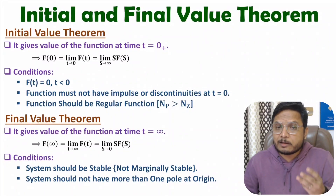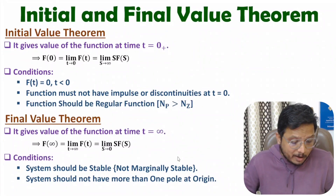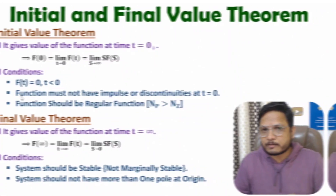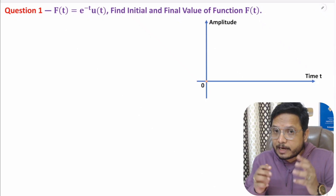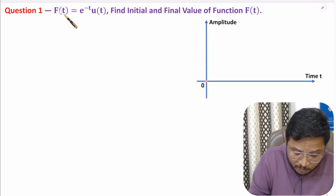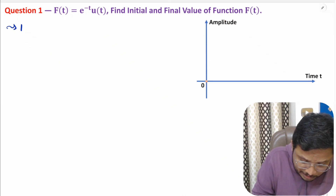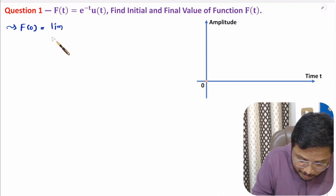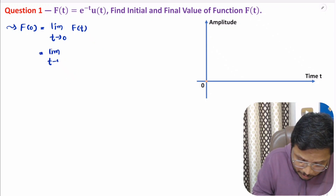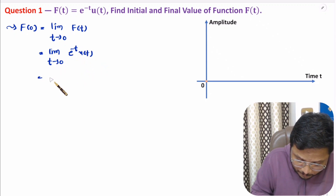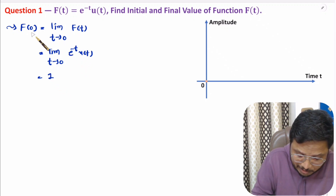Now I will solve three interesting examples. In the first question, we have a function in the time domain: f(t) = e^(−t)·u(t), and we need to identify the initial and final value. To calculate the initial value, f(0) is the limit as t tends to 0 of f(t). Here the function is e^(−t)·u(t), and if we substitute t equals 0, then e^0 is 1. So the initial value is 1.